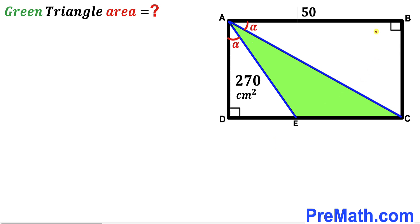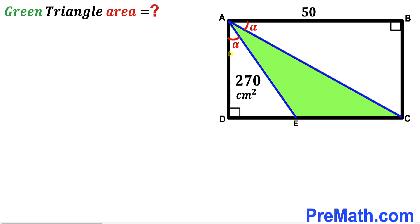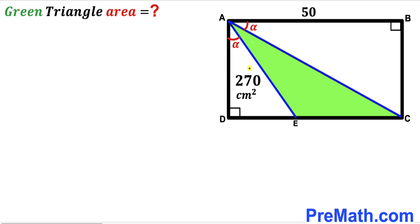Welcome to Premath. In this video we have rectangle ABCD along with diagonal AC and segment AE as shown in the diagram. We end up with this green shaded triangle AEC such that angle DAE is alpha and angle BAC is alpha as well — in other words these two angles are congruent. Moreover, side AB of this rectangle is 50 cm and the area of triangle ADE is 270 cm².